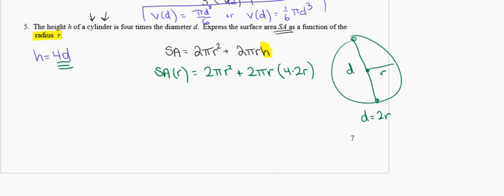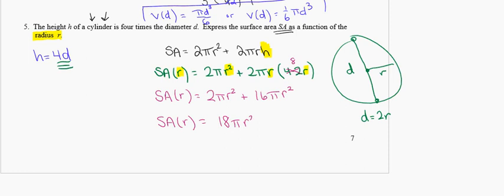Now the formula is expressed entirely in terms of r. Simplifying: 2πr² plus 2πr times 8r gives 2πr² plus 16πr². Combining like terms: 2 plus 16 equals 18, so the surface area in terms of r is 18πr².